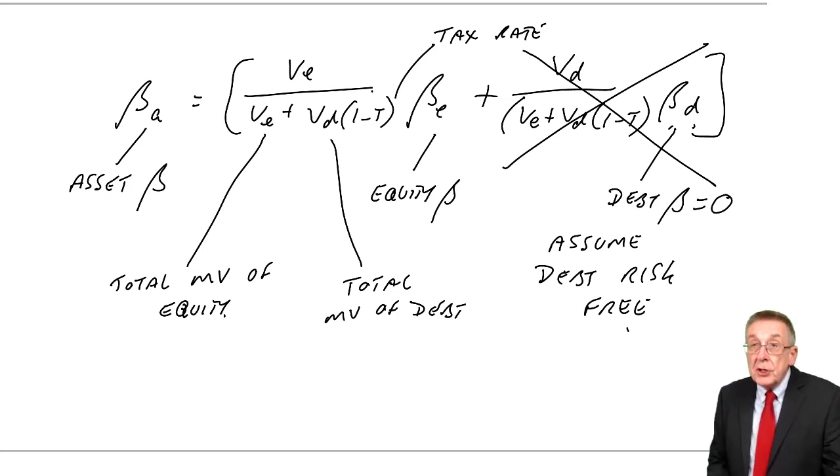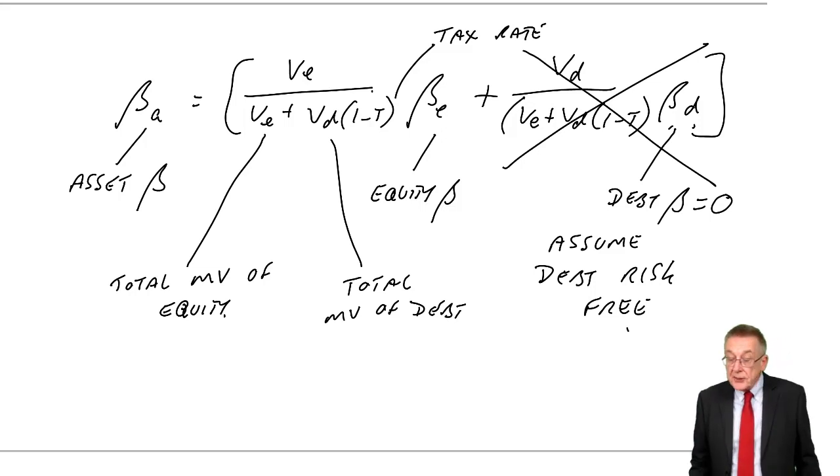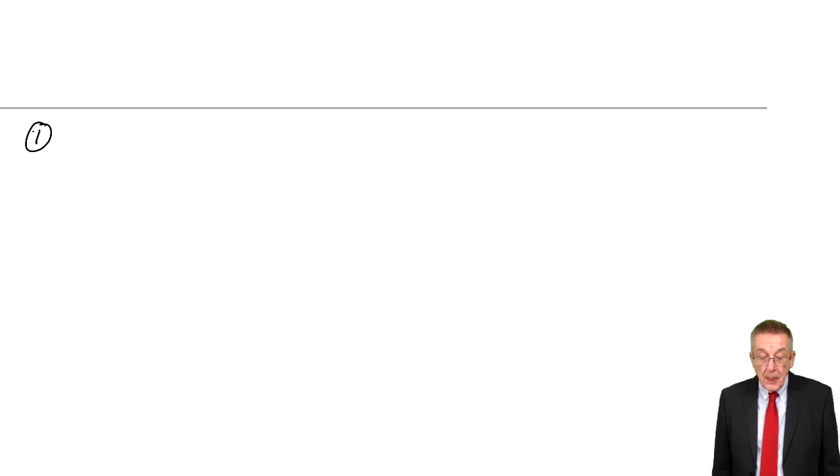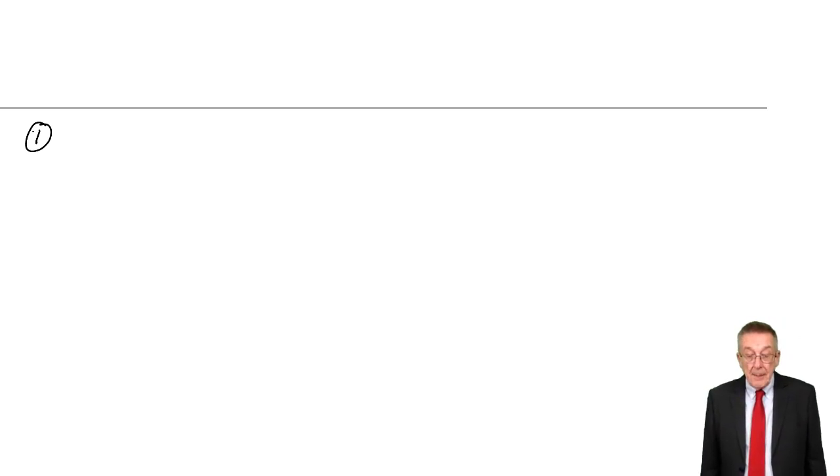Let me show you the two ways in which you can be tested on it. First, look at example one. P has a gearing ratio — debt to equity — of 0.4, and the beta of its shares is 1.8. Q is also a geared company. Its gearing ratio is 0.2 and the beta of its shares is 1.5. Tax is 30%.